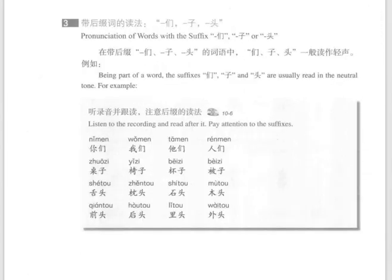听录音并跟读，注意后缀的读法。Listen to the recording and read after it. Pay attention to the suffixes. 你们、我们、他们、人们。桌子、椅子、杯子、被子。舌头、枕头、石头、木头、前头、后头、底头、外头。